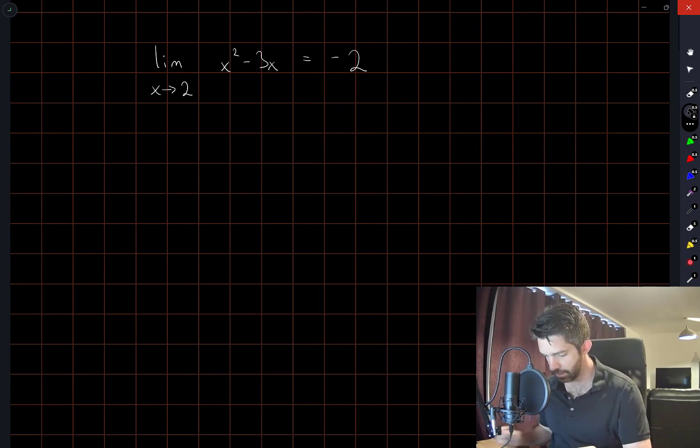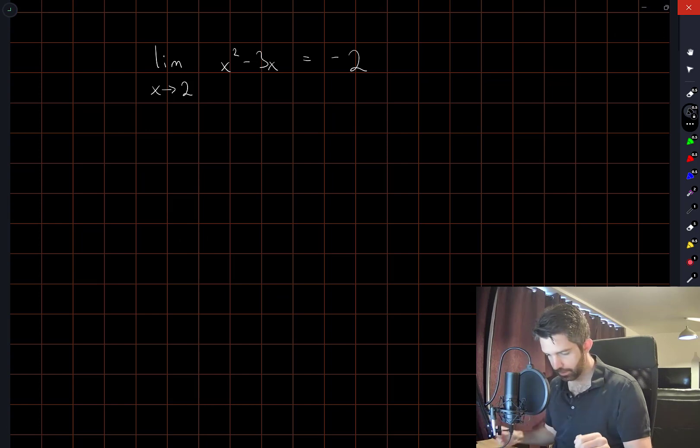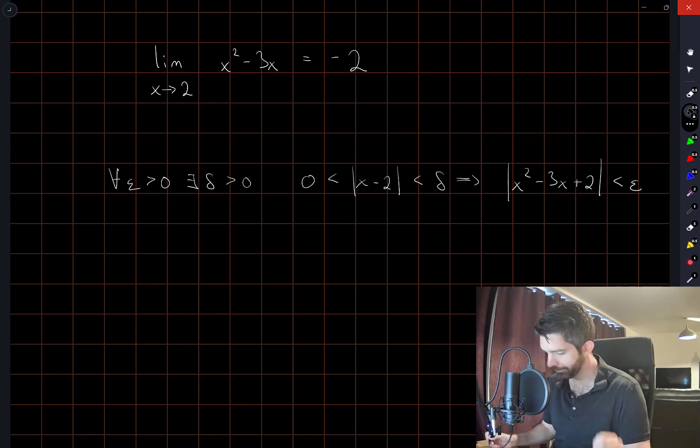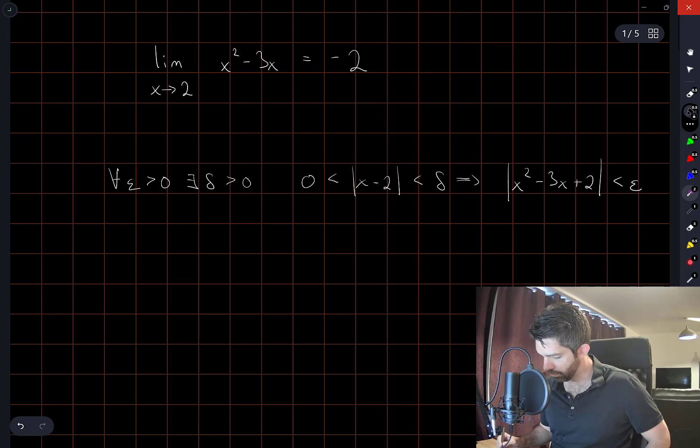So let me write down, start by writing down the full statement we need to prove in terms of epsilon and delta. Alright, so I'm going to play around with things a little bit before I go through the entire sequence of the proof.